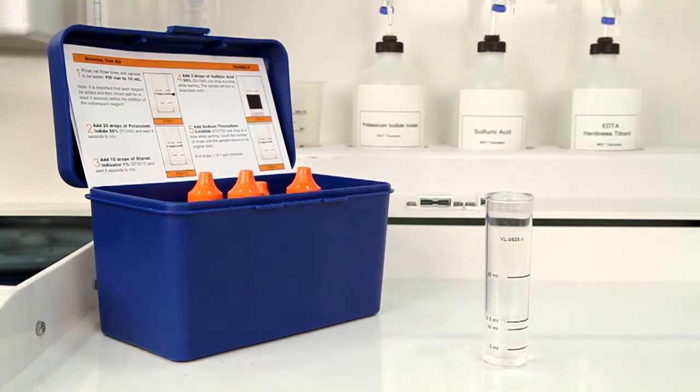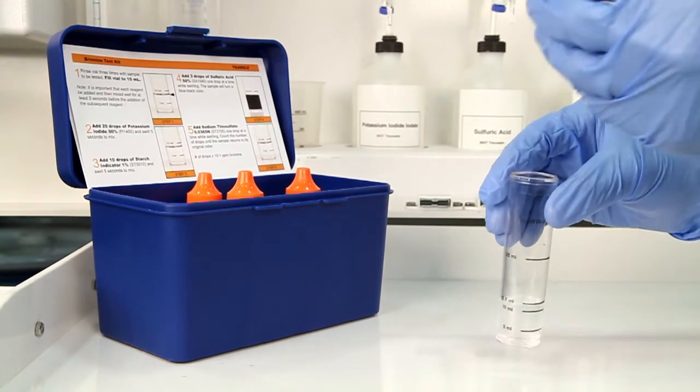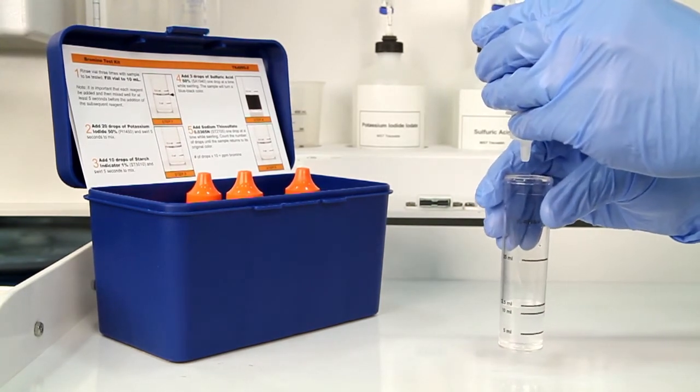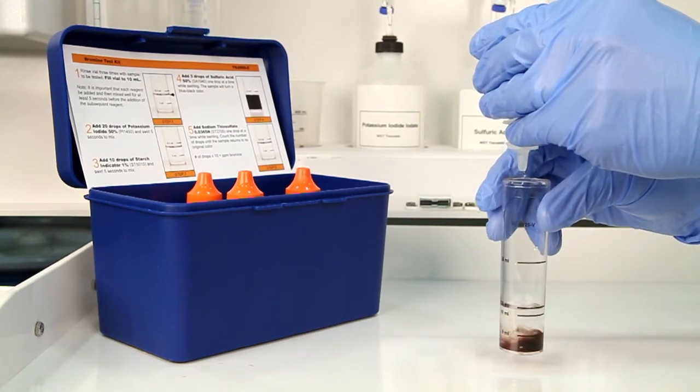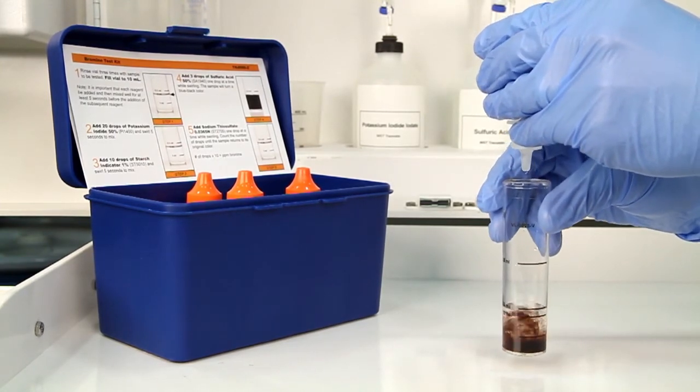The next step is to add 3 drops of sulfuric acid 50%. Remember to hold the bottle vertically, and swirl the vial for 5 seconds to mix the reagents. The sample will turn a blue-black color.